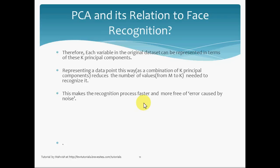50 is very much less than 400. Naturally, this makes the recognition process faster and also more free of error. Why free of error? Because in the previous image where we saw the eigenfaces, we saw that we discarded all those noisy eigenfaces. In short, we actually discarded all the noise in the data set, so noise will have the least effect on the results of recognition.